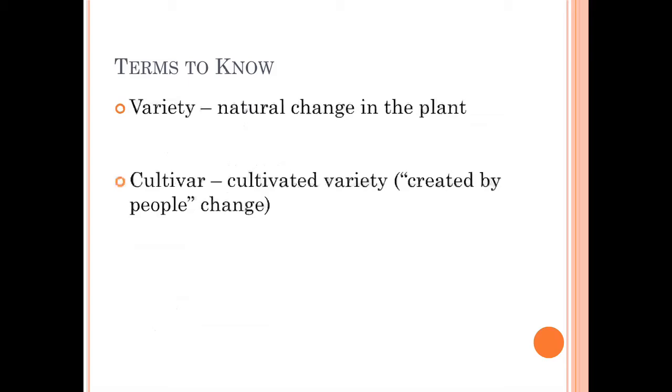Sometimes we have natural changes in the plant. We call that a variety. Variety means difference or change. And sometimes Mother Nature comes up with these changes. So you might see, for example, Cornus Florida, Variety Rubra. That would be a pink flowering dogwood. Most of our dogwoods are white flowering. But occasionally they flower pink and that happened in nature.